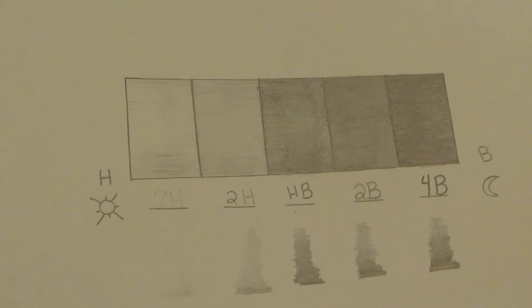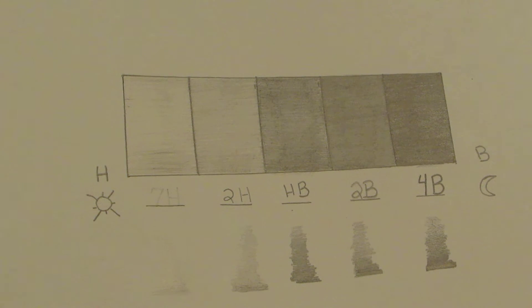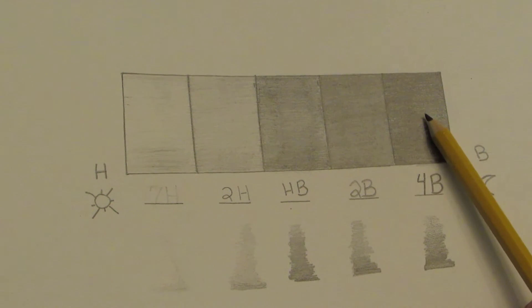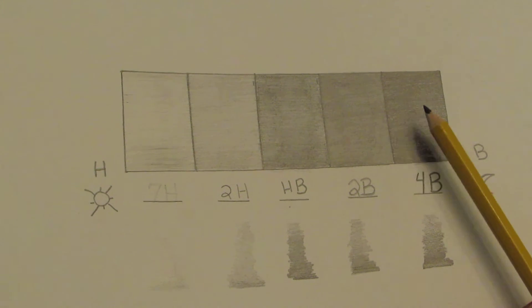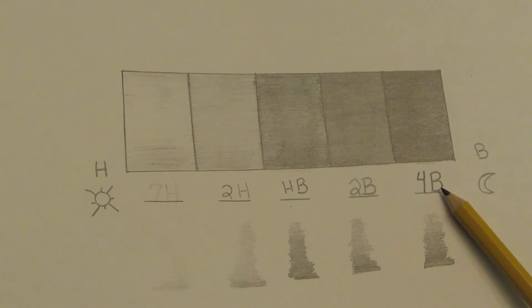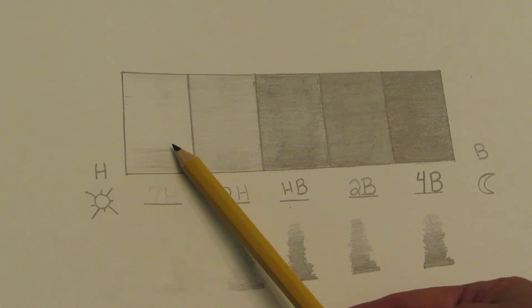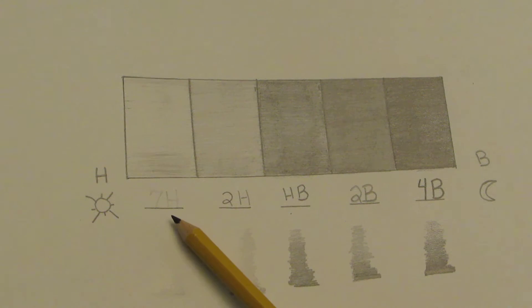Now you might be wondering, well, why should I use all of these different pencils? Well, that's a good question. These different pencils will do different things for you. You can obviously get some of the pencils a lot darker, so if you were trying to shade something and represent black, you might want to choose something that would be a 4B. If you're shading something that's supposed to look very light, very airy, you're going to want to choose a lighter pencil.